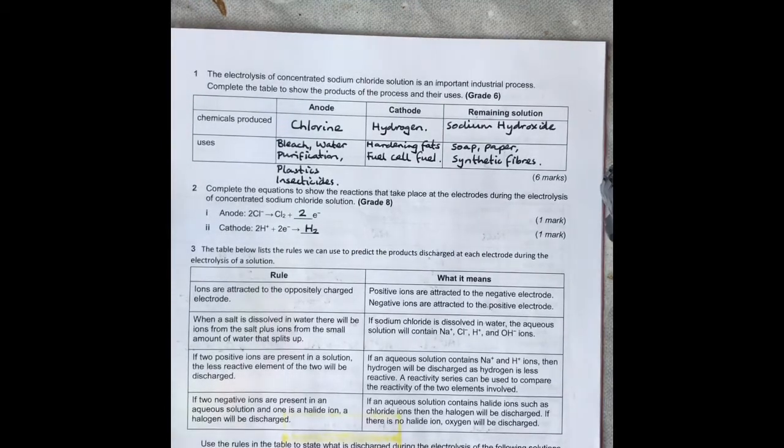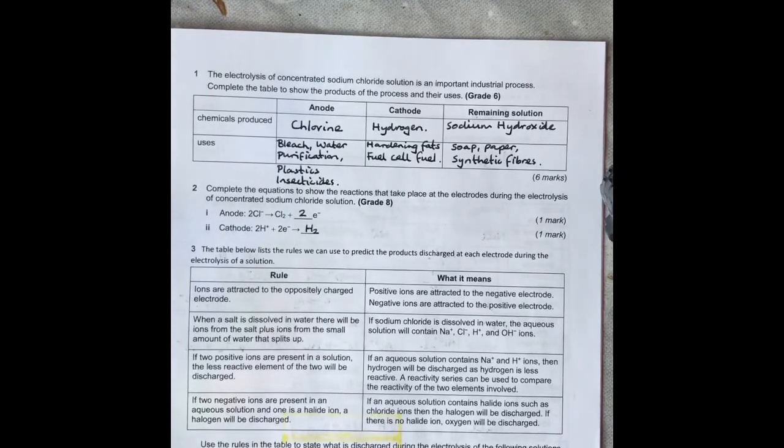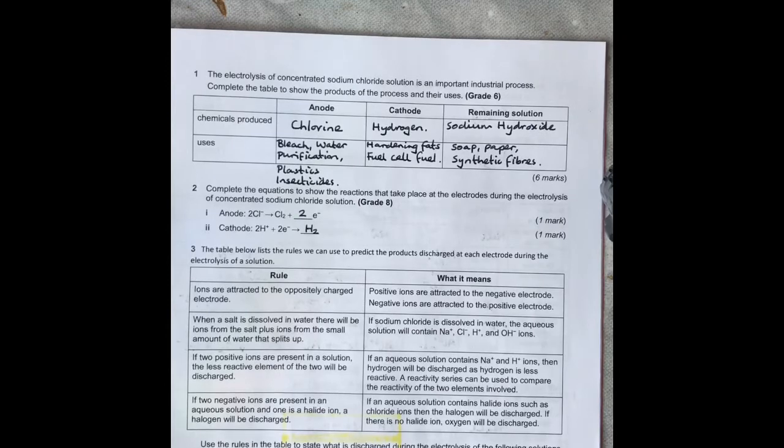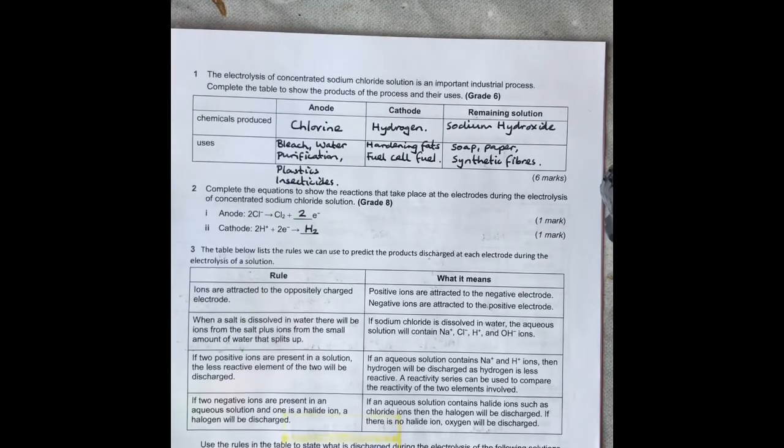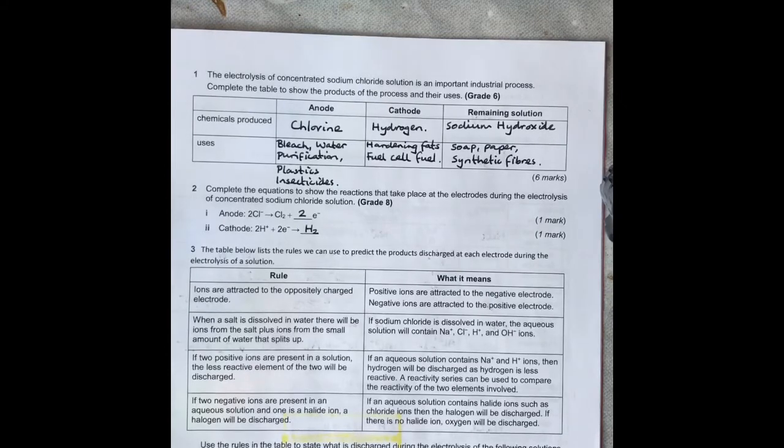What is discharged in an aqueous solution? At the positive electrode we have chlorine, and the negative we have hydrogen. Hydrogen because hydrogen is less reactive than sodium, and chlorine is a halogen so it's given off first.